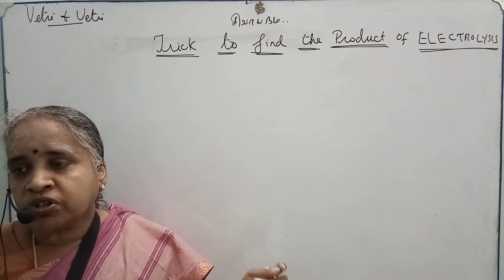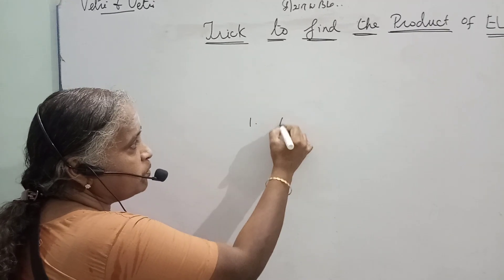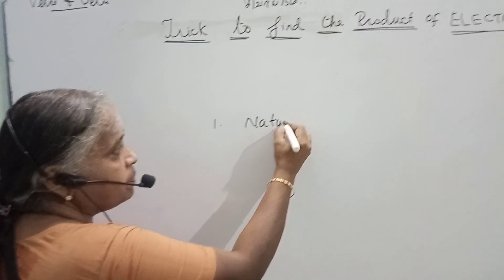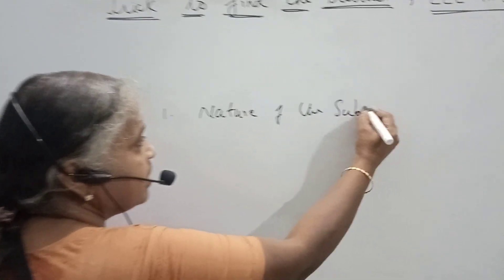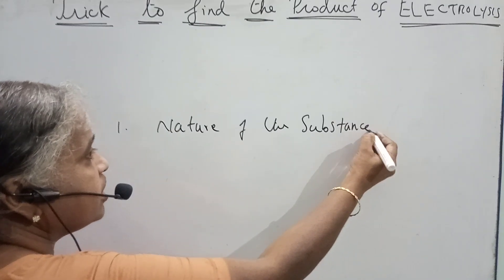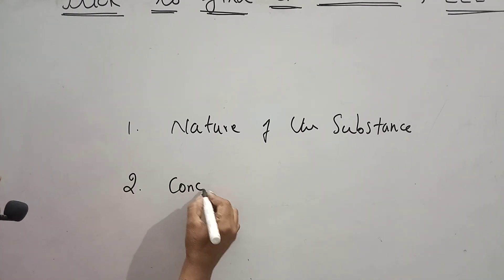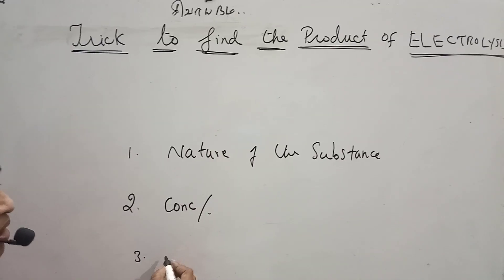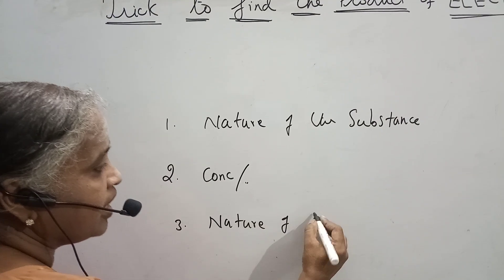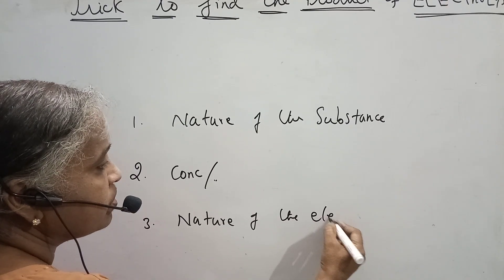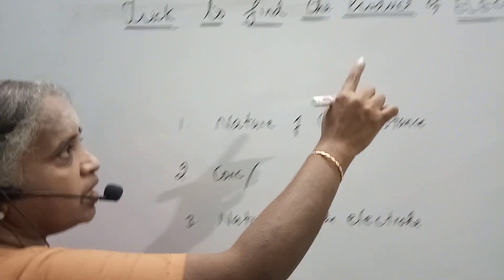Today we are going to see what are the things this is based on. The product depends upon: number one, nature of the substance — whether it is going to be an electrolyte or not. Second point, based on concentration of the solution. Third point, nature of the electrode. So based on these, we are going to get the product.